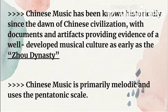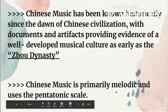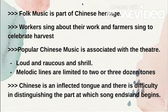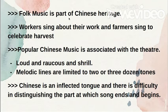The tonal system is founded on the 12 pitches of the octave generated from the spiral of the fifth. Chinese folk music is primarily melodic and uses the pentatonic scale — what is pentatonic? It is a five-tone scale. Folk music is also part of Chinese heritage, which is similar to other nations in East Asia.